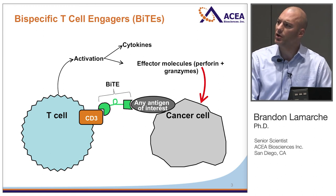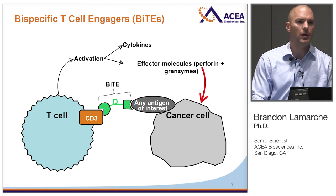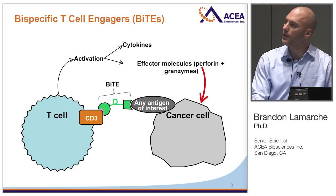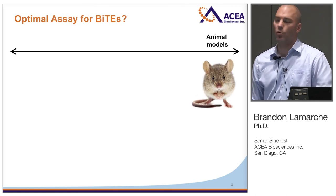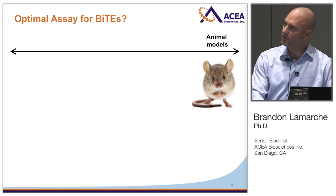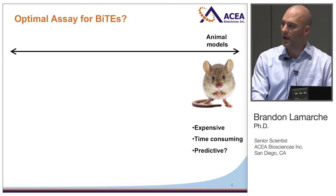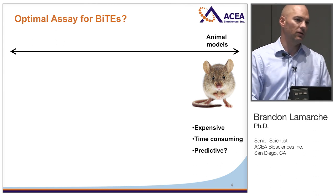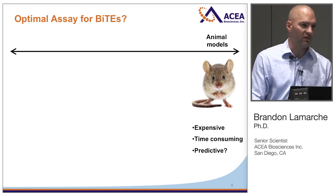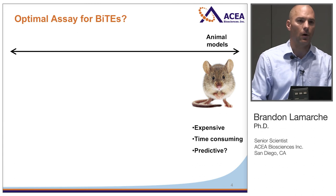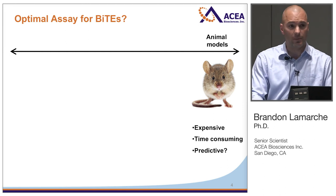In terms of discovery and development of novel BiTEs, what is the ideal assay? There are many available. At one end of the spectrum you have animal models — whole organism systems — which are essential but also expensive and time-consuming. They're not always predictive; any one of us can rattle off examples where therapy developed in mice was very effective but once brought into humans didn't translate at all.